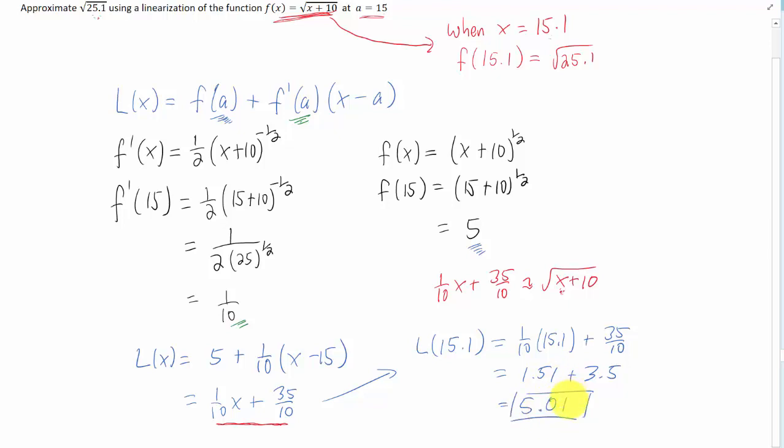So using a line, we have approximated the value of the square root of 25.1, and we've gotten an answer of 5.01.